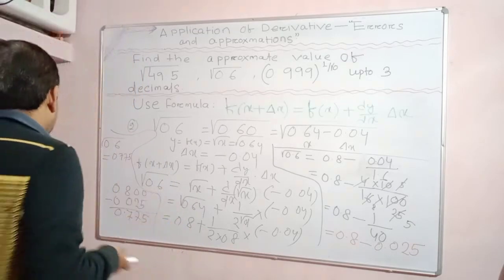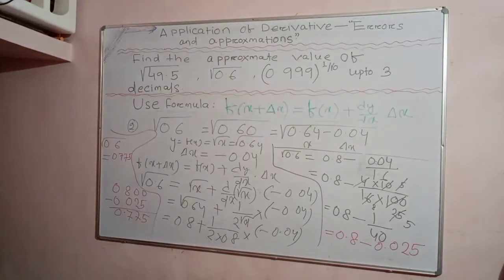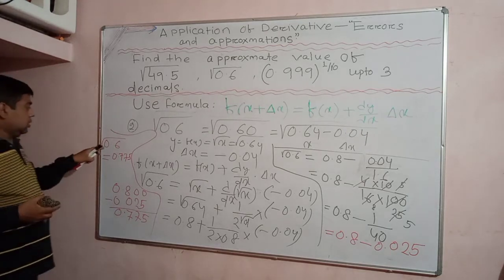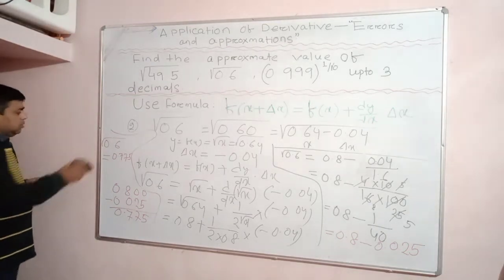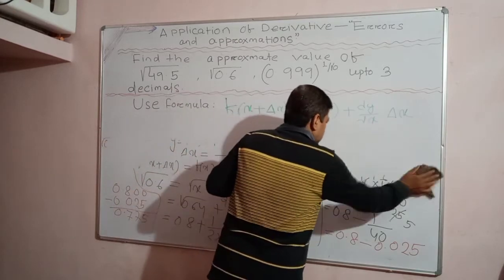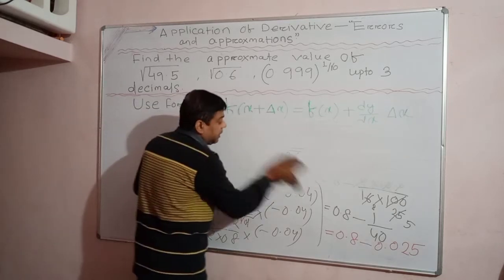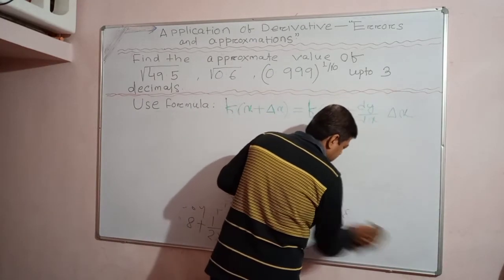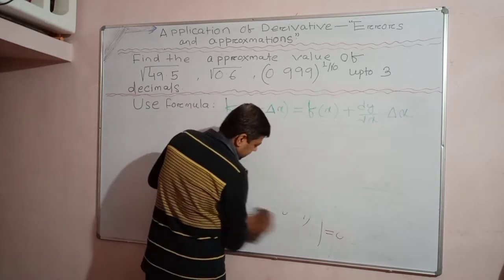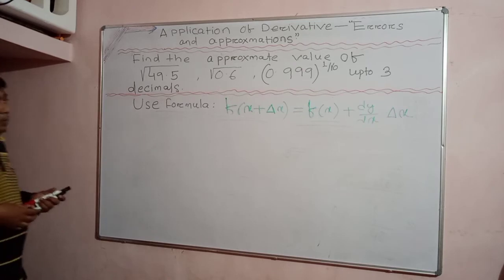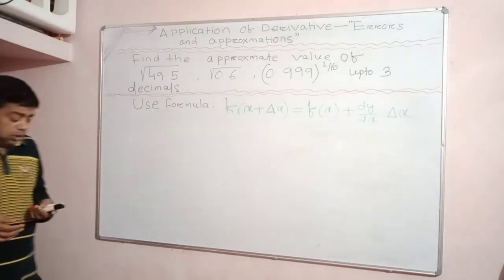Now let us move to the third question: evaluate (0.999)^(1/10) up to 3 decimal places. The power here is 1/10. This is one interesting fact — you can find the value of any number raised to any power using this application of derivatives.